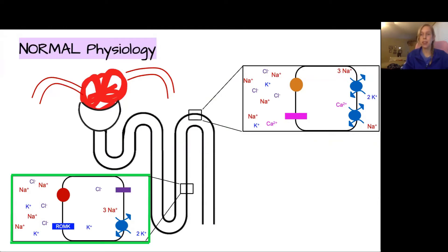In the ascending loop of Henle, there's a really important ion pump called the NKCC transporter that takes one sodium, one potassium, and two chloride into the cell. This is powered by a sodium-potassium pump on the other side of the cell, which also has associated chloride and potassium channels.